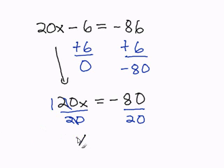So I get x by itself. And negative 80 divided by 20 is negative 4. x equals negative 4 is my answer, and this completes my problem.